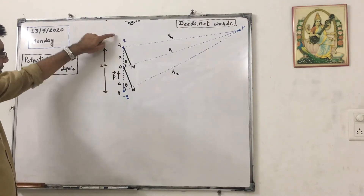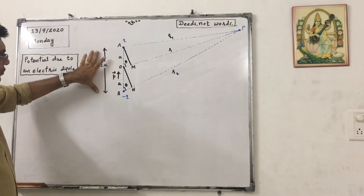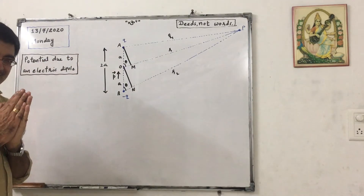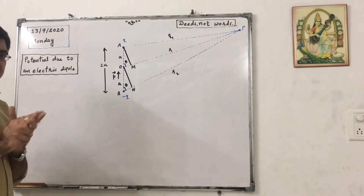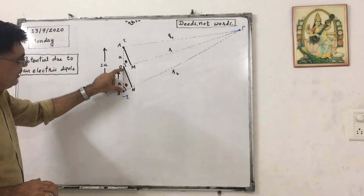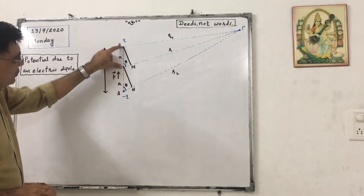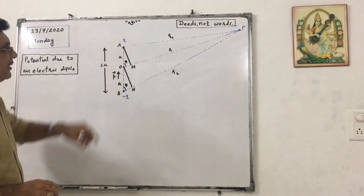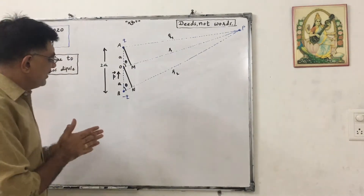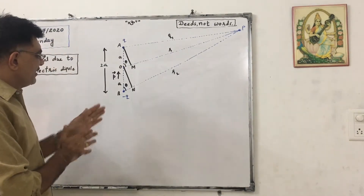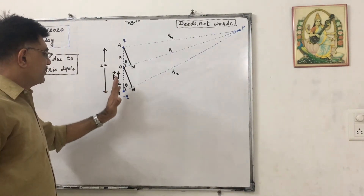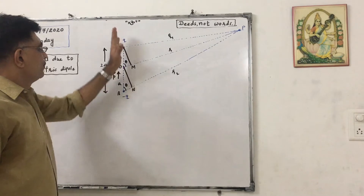The dipole has charges minus q and plus q, separated by a distance of 2a, which is very small — as small as possible. So this distance will be a, and this distance also will be a. We know that the electric dipole moment is in the direction from minus q to plus q.